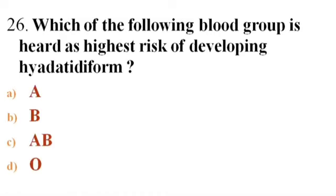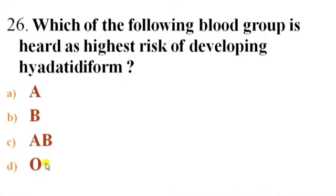Next question: Which blood group is at highest risk of developing hypertensive activity? Options: A) A blood group, B) B blood group, C) AB, D) O blood group. Answer is AB.